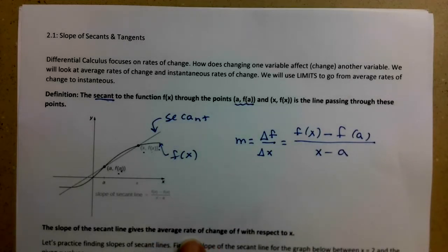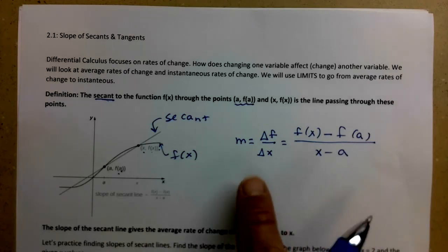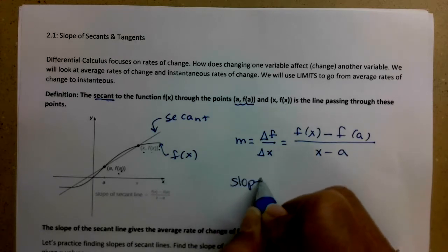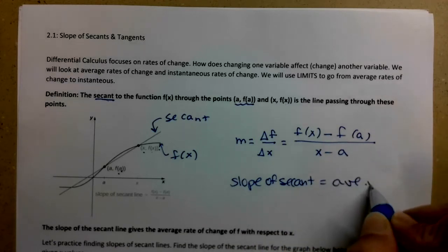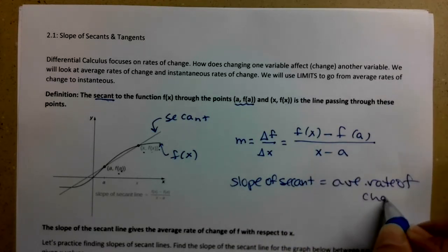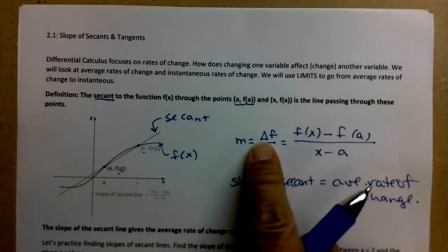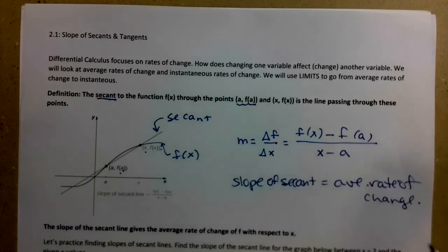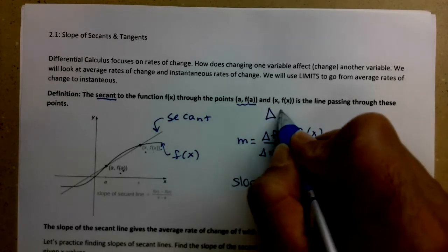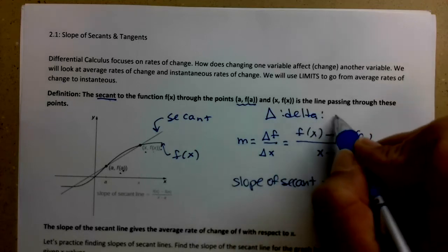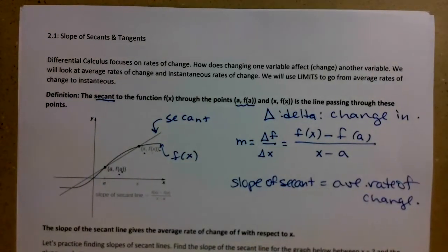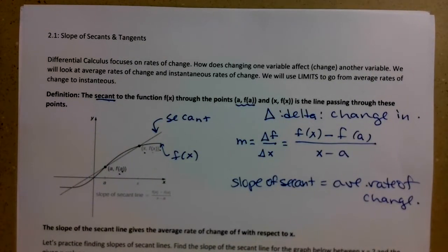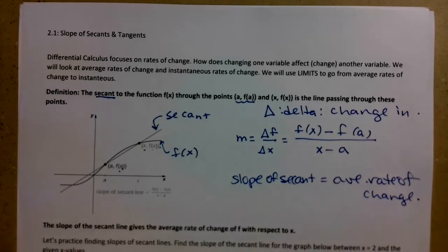So the slope of that secant line is always change in f over change in x. So the change in those two x values. It's the y value up top minus the y value down here. So y sub 2 minus y sub 1 over x sub 2 minus x sub 1. The slope of the secant, that is the average rate of change of f with respect to x. So slope of the secant equals average rate of change. The delta f, delta x - delta in math, this is the delta, Greek d, always means change in.